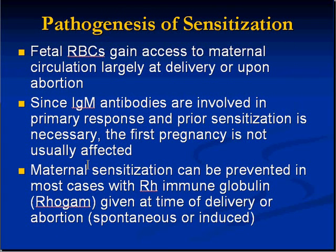It's a sensitization process. In the very first delivery, when fetal blood crosses into the maternal circulation, sensitization occurs, but it may not be very much. Therefore, the first pregnancy is not usually affected. But in the second or third pregnancy, there has been a lot of sensitization, so these are when the serious hemolytic problems can develop. The main treatment is really prevention — giving immune globulin or RhoGAM at the time of delivery or abortion. That's basically the miraculous way these things are prevented.